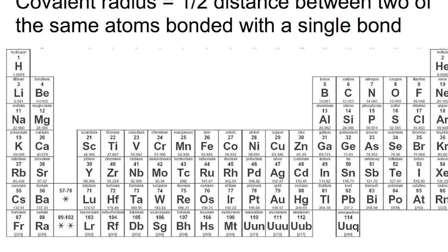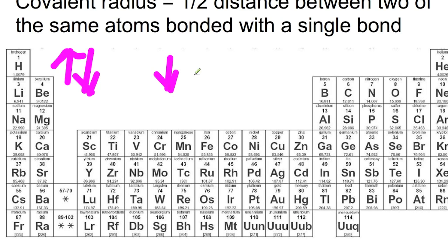If we look at covalent radius, which is half the distance between two of the same atoms bonded with a single bond — for some atoms this can't apply directly because they don't form covalent bonds, but adjustments allow us to work it out — we find that covalent radius increases as you go down a group and decreases as you go across a period.